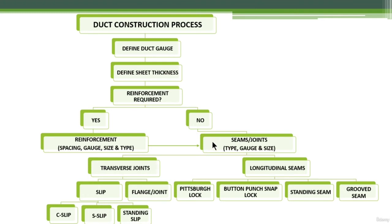When you reach the seams and joints step, you have two types as discussed earlier: transverse joints and longitudinal seams. Longitudinal seams connect the sheet metal along the longitudinal side of the duct. Transverse joints connect the duct boxes and consist of two main types: slip type and flange or joint type.